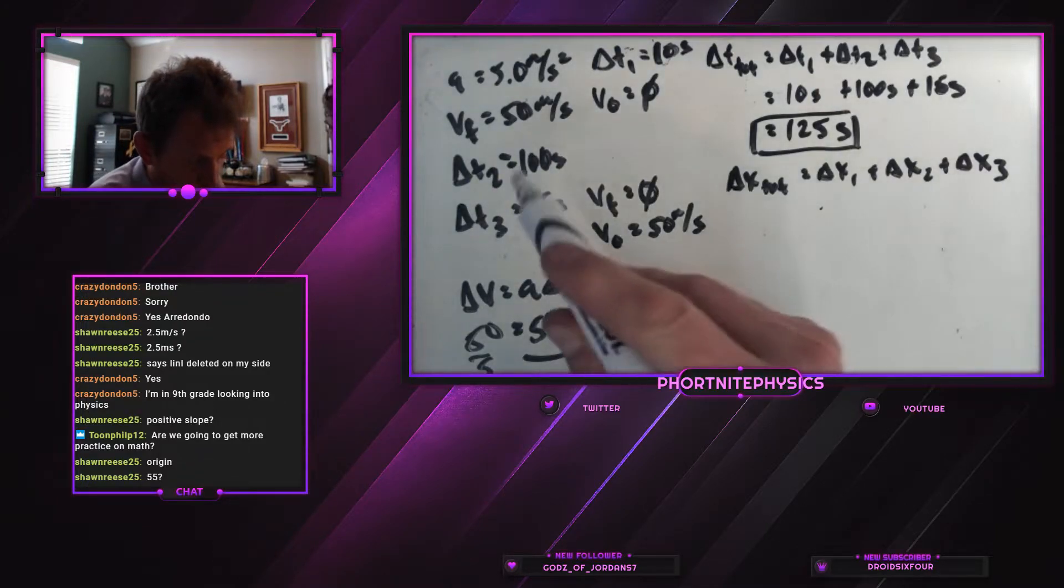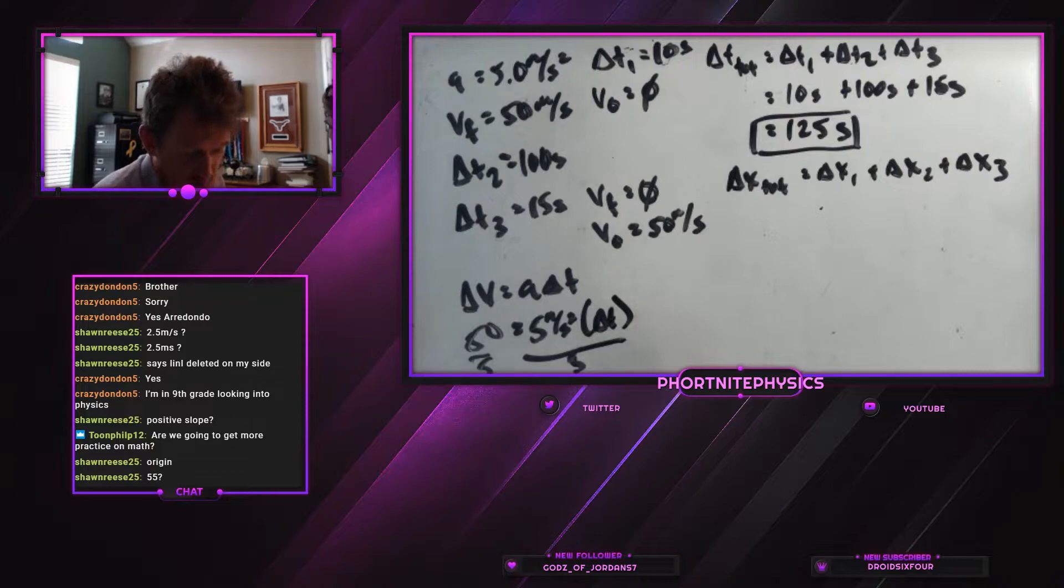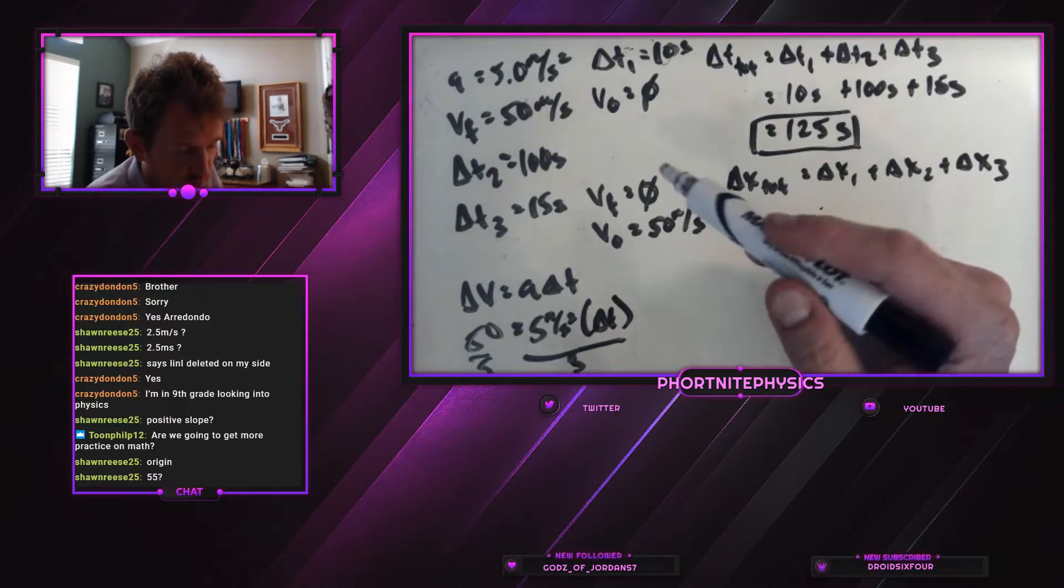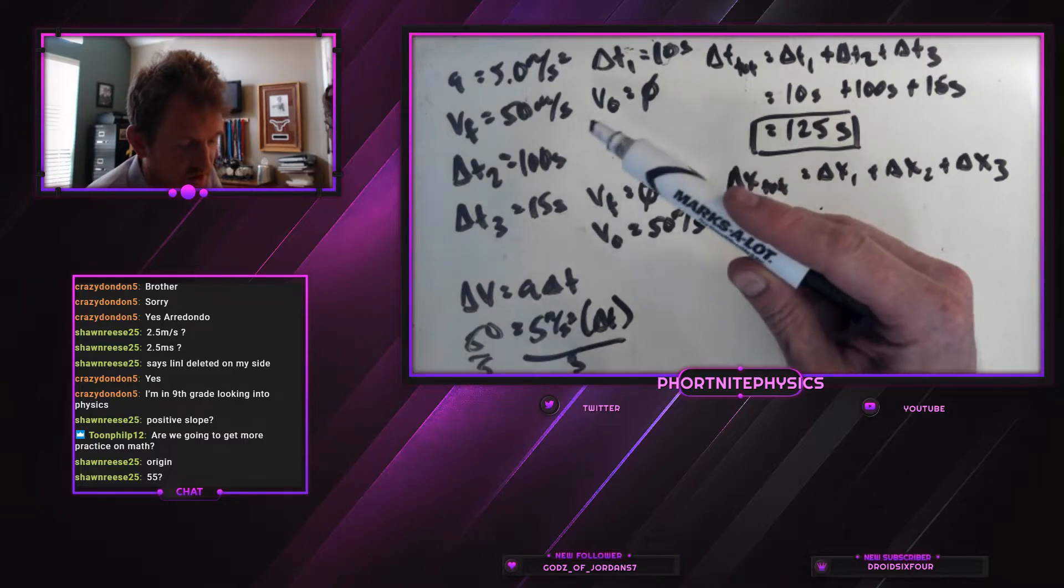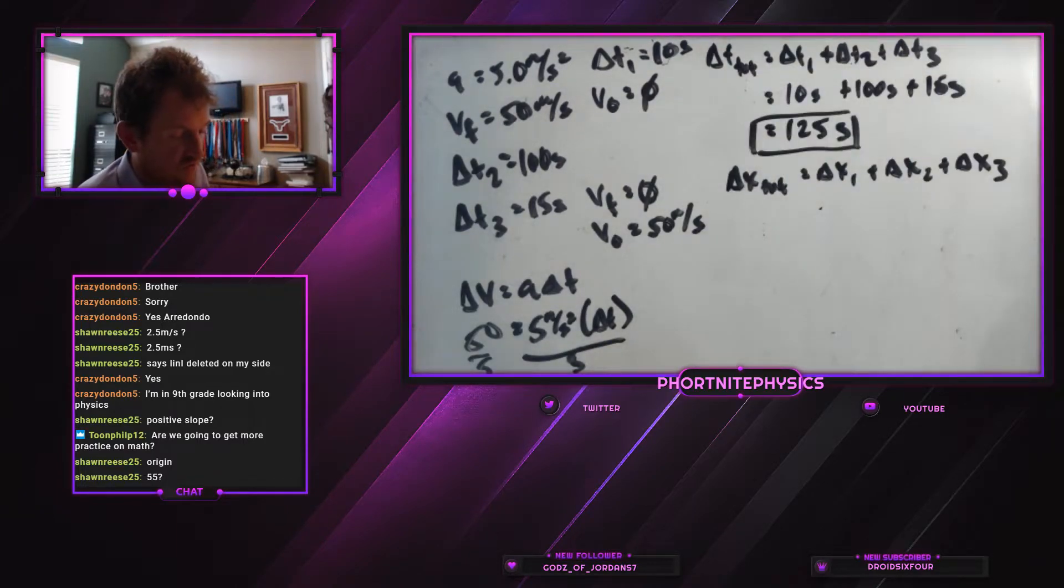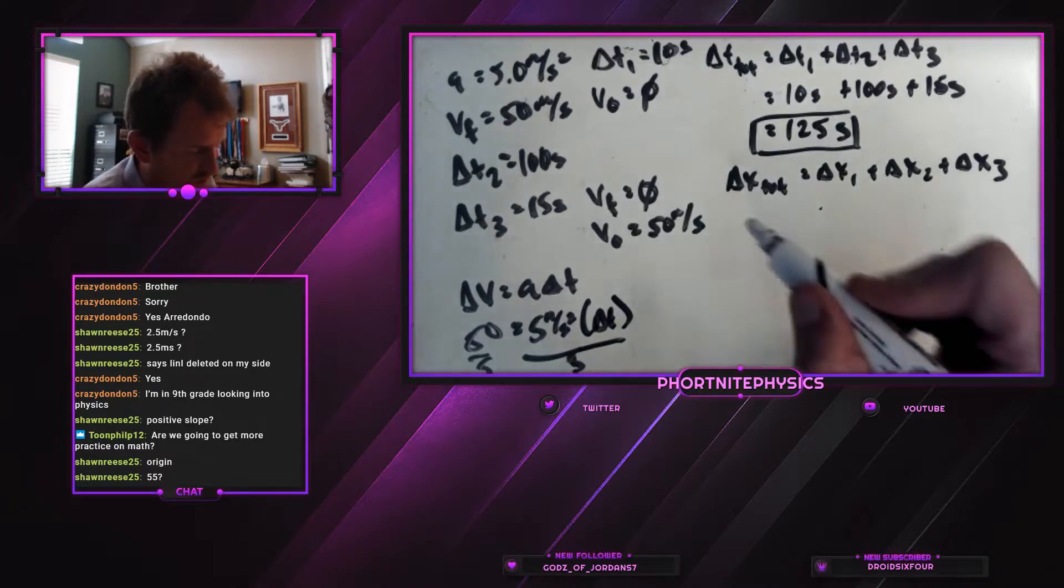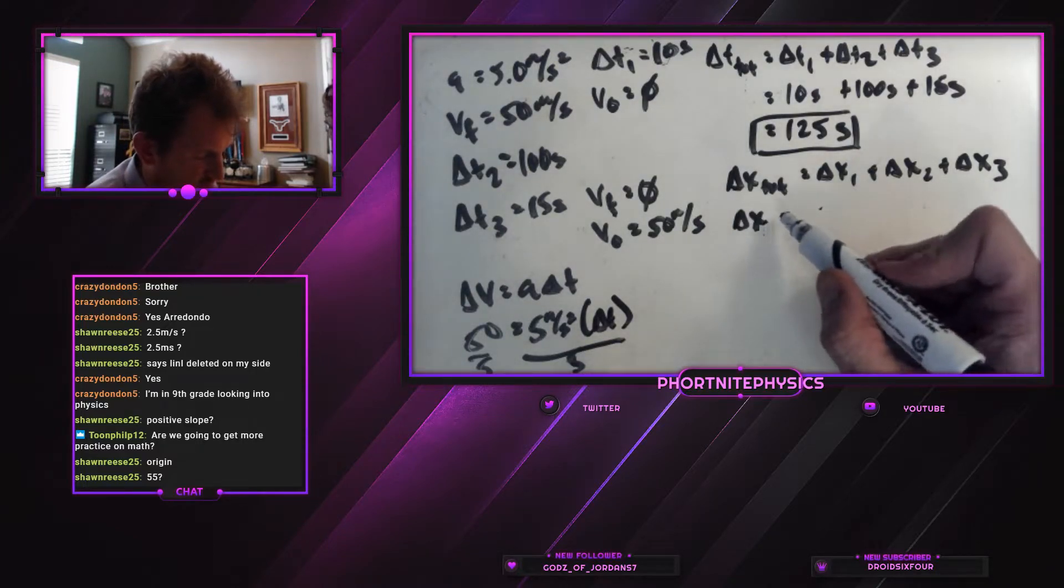So what we do, we need to find out our delta x's. We aren't given any of them, so we need to find them out. The first one, we're given our initial velocity, final velocity, a, and we need to solve for our delta x. There's a couple ways we can do that, but this one seems the most straightforward. So let's just go ahead and do it.